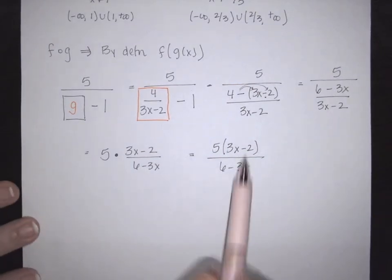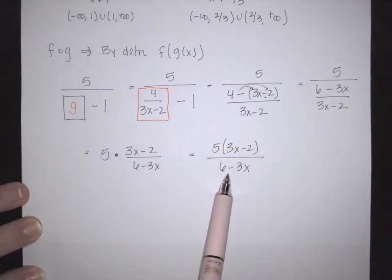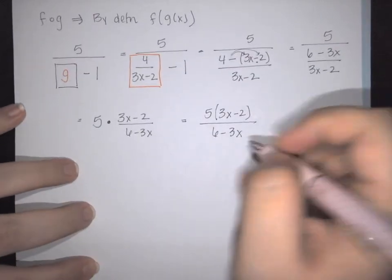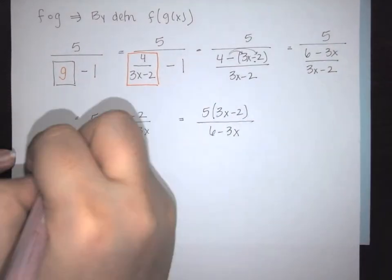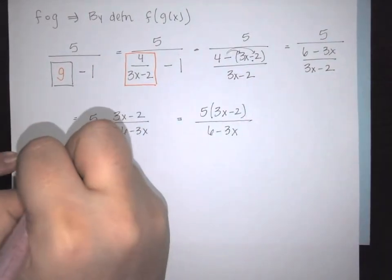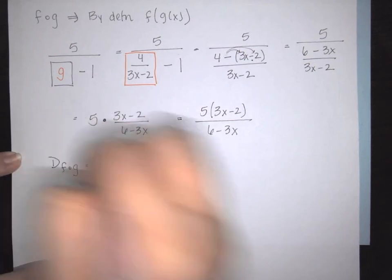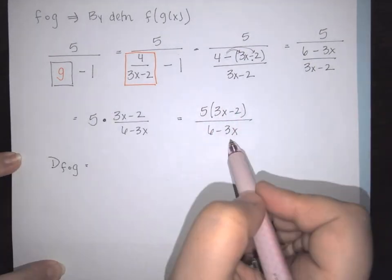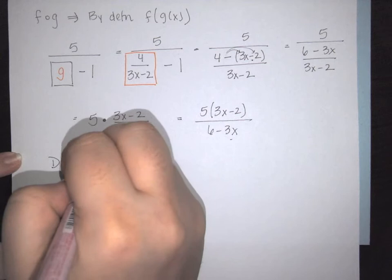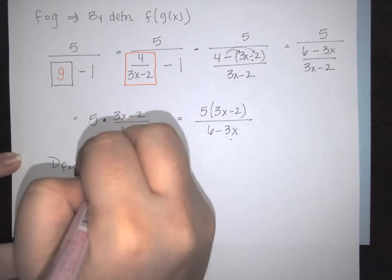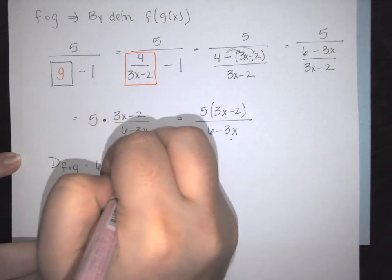So in this case I have a new function here, and so I want to go ahead and find the domain for my function f of g. This is going to follow the normal fraction rule. So this is going to say that the 6 minus 3x cannot be 0.